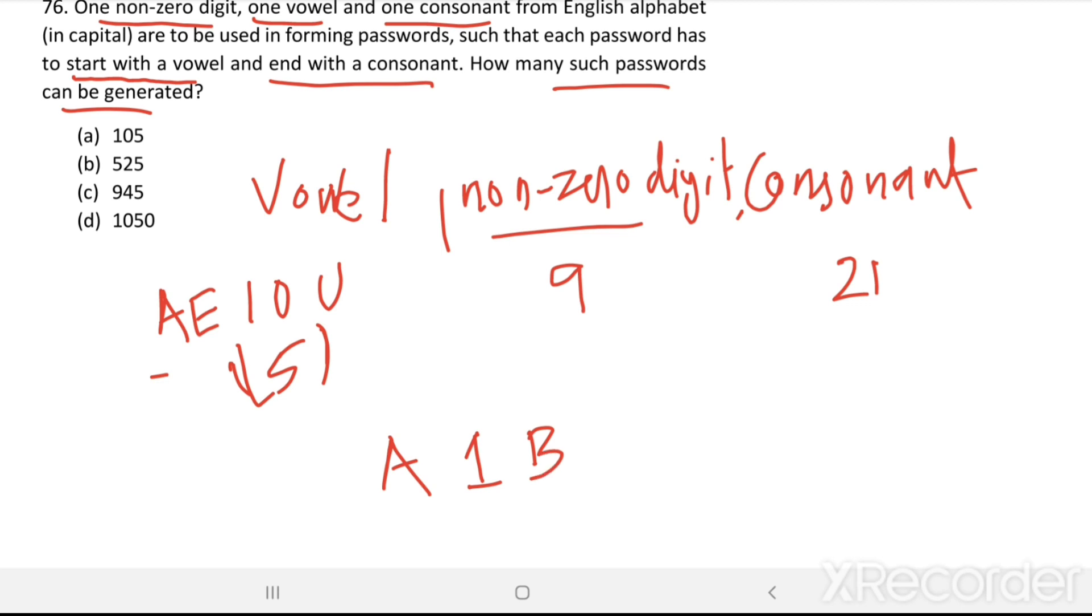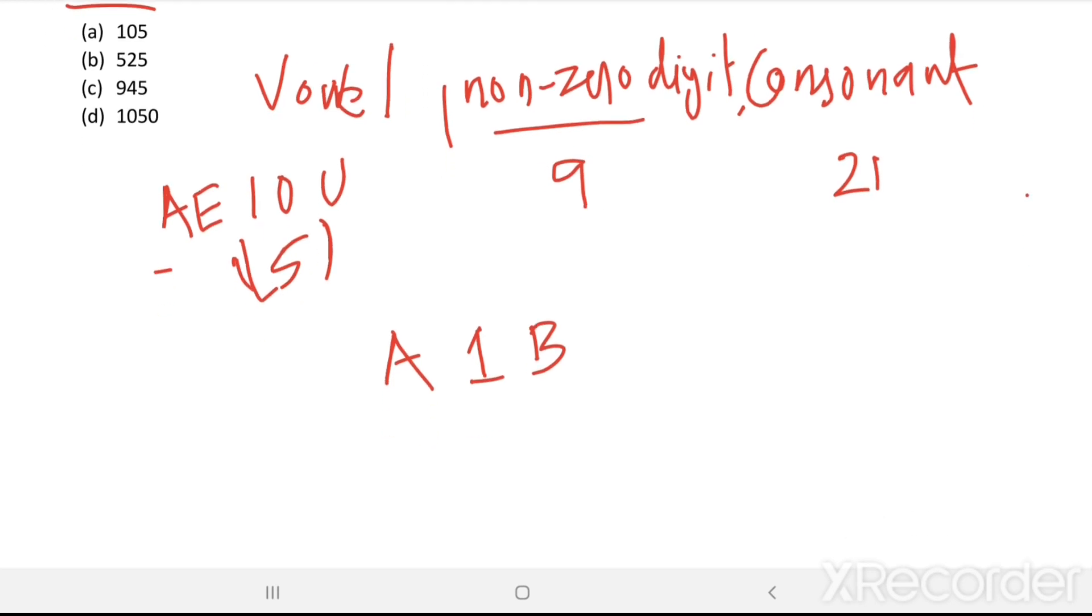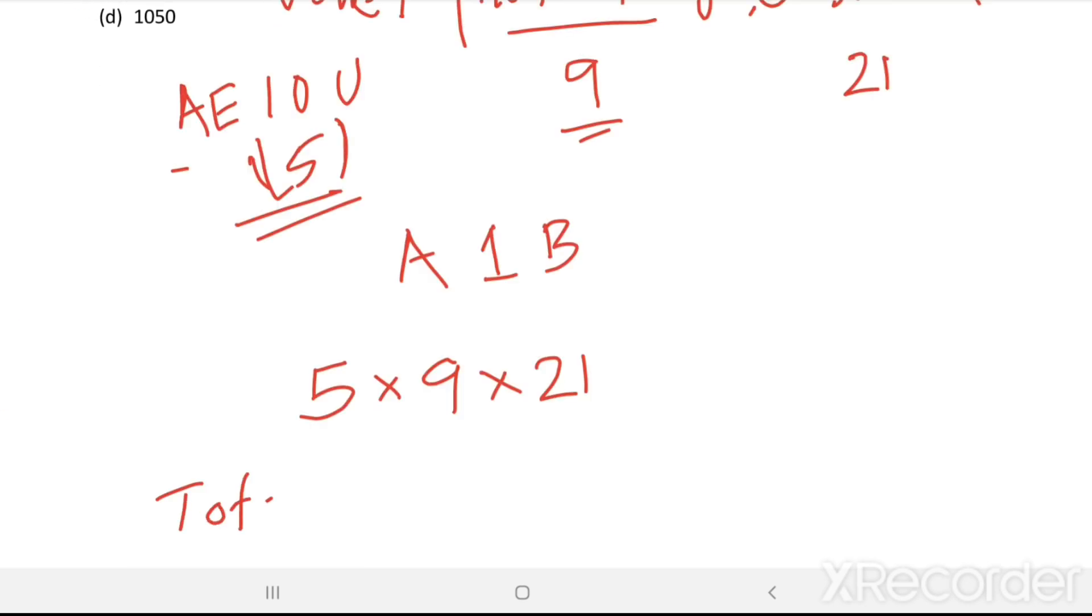How many such passwords are possible? So first place, it is vowels - you can choose one vowel out of five vowels in five ways. You can choose one digit, non-zero digit, out of nine non-zero digits in nine ways. And you can choose one consonant out of 21 consonants in 21 ways. So multiplying all these, we get total passwords possible.